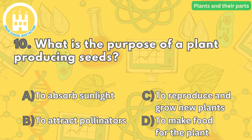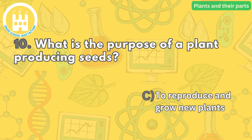And lastly, what is the purpose of a plant producing seeds? The correct answer is letter C — to reproduce and grow new plants. Seeds contain the embryo of a new plant, and when they are dispersed and provided with the right conditions, they can germinate and develop into new plants.